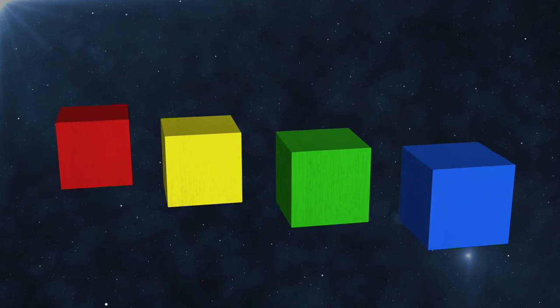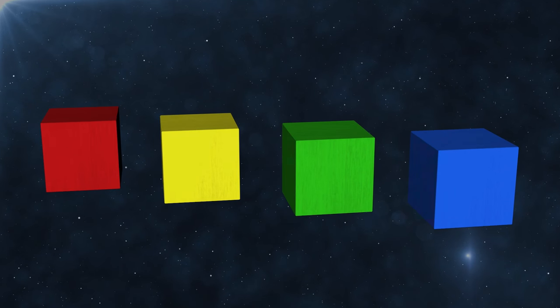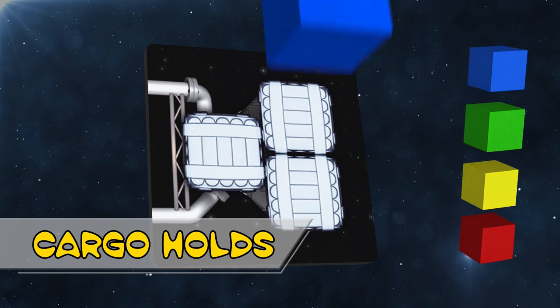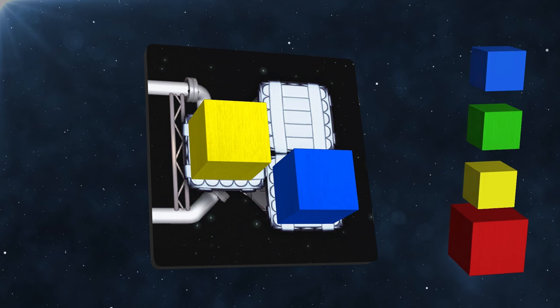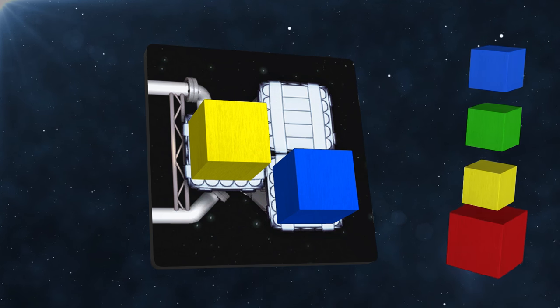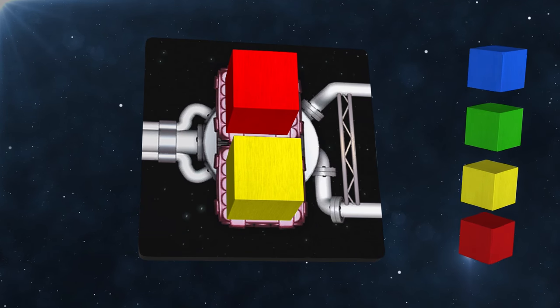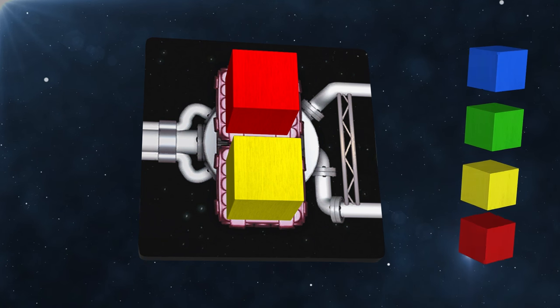During your adventure you may have the opportunity to stop and pick up valuable cargo. To store the goods you collect you'll need cargo holds. Standard holds can store blue, green or yellow cargo. Red cargo however is hazardous and to store this you'll need a special cargo hold, which can store any type of good. Since cargo is sold for a profit at the end of a flight, you want to have as many cargo holds as possible.